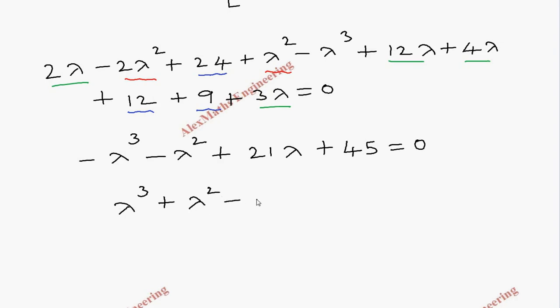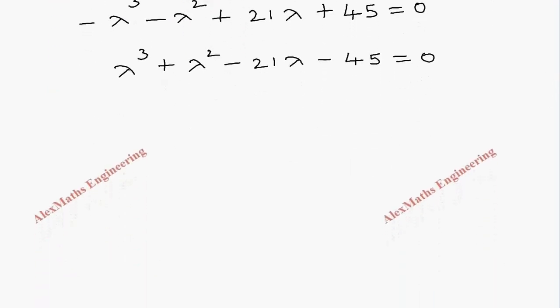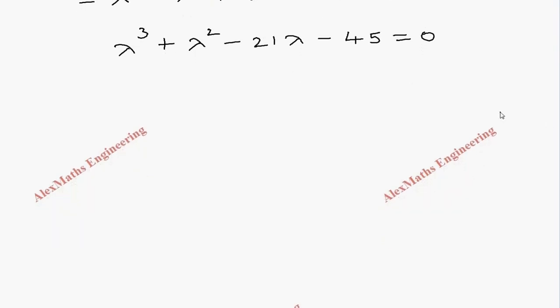Throughout we change the sign, giving lambda cubed plus lambda squared minus 21 lambda minus 45 equal to 0. Solving this gives us 3 values for lambda.